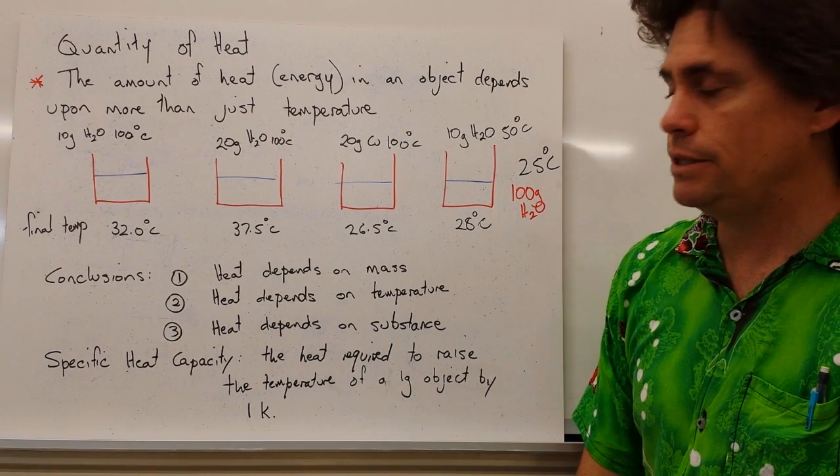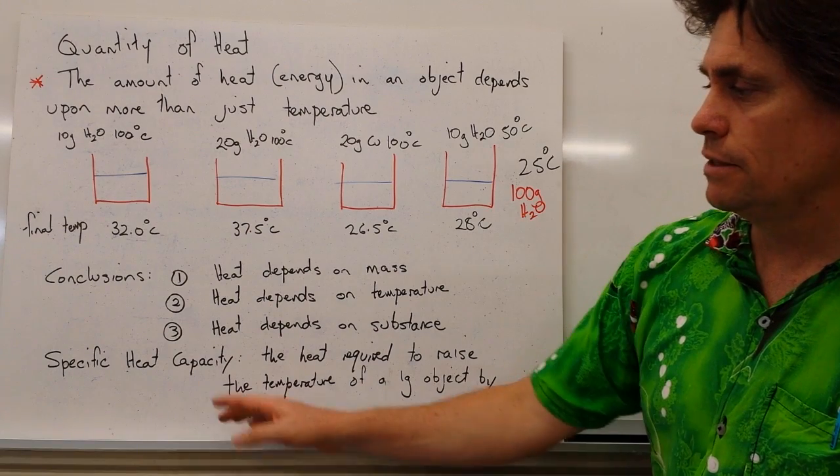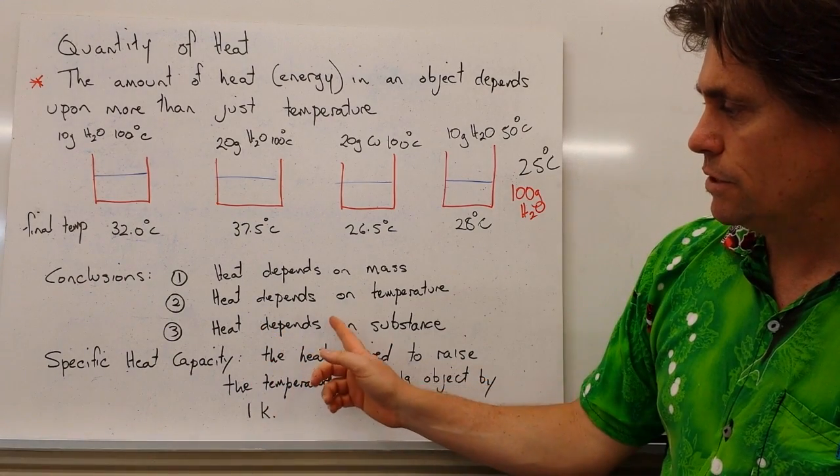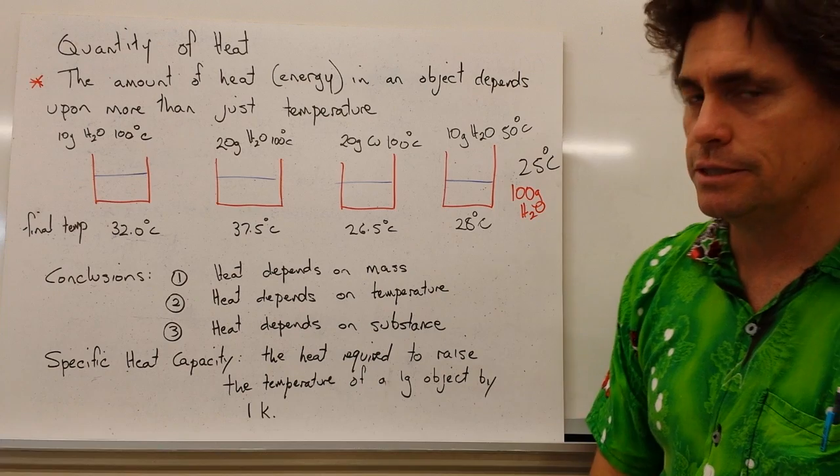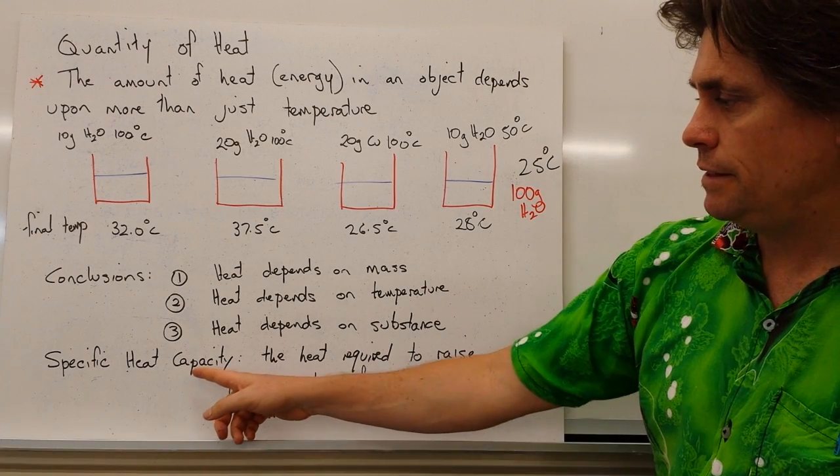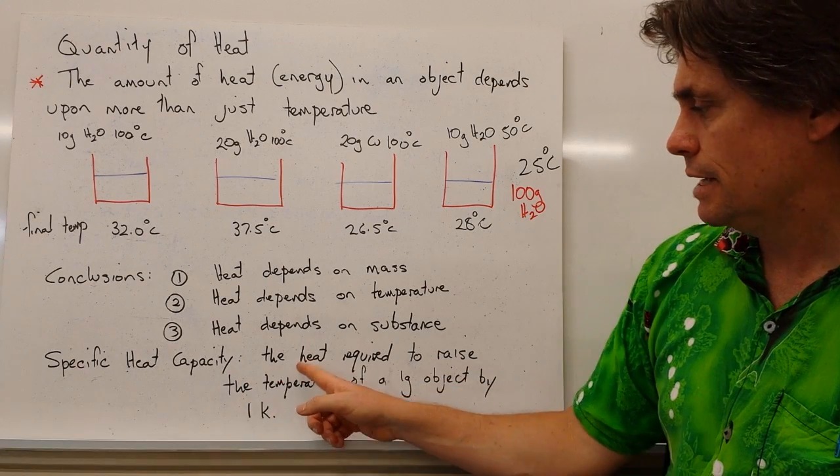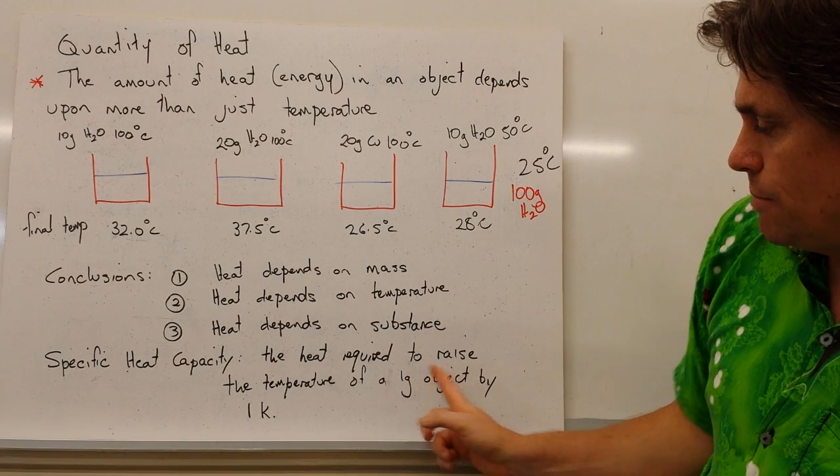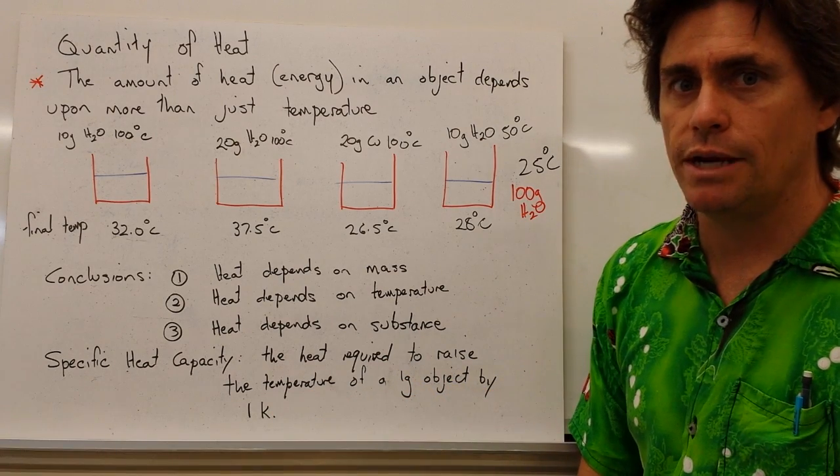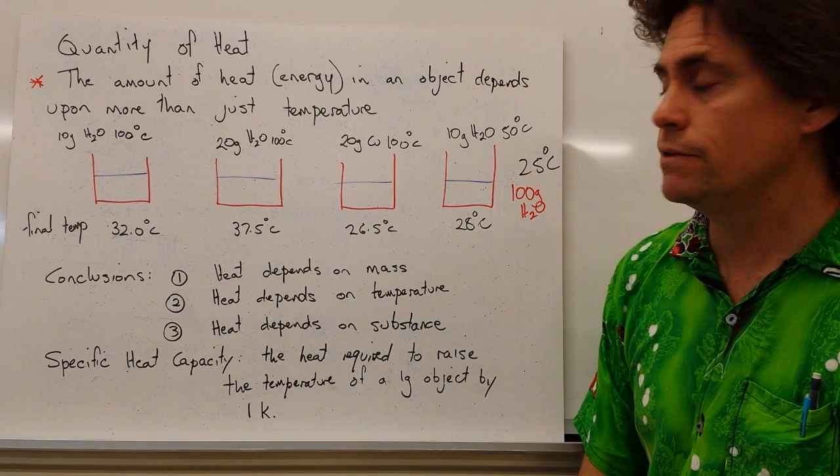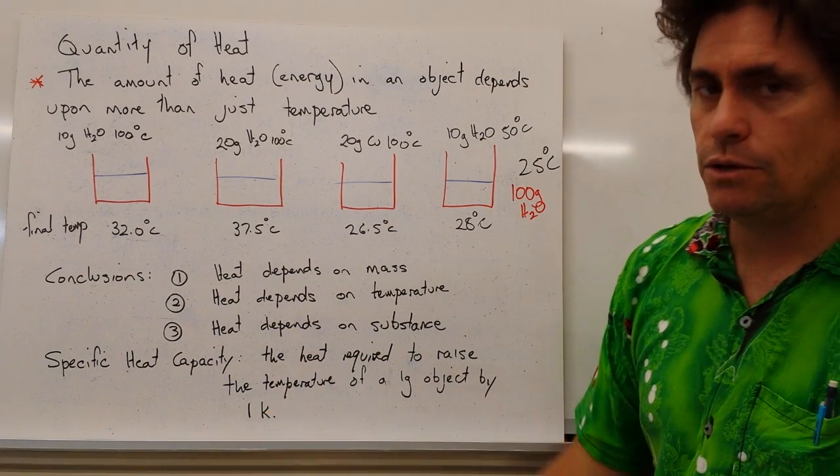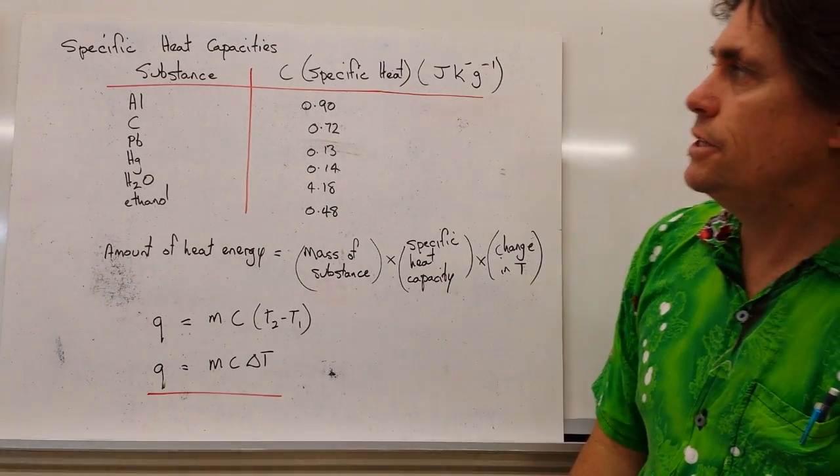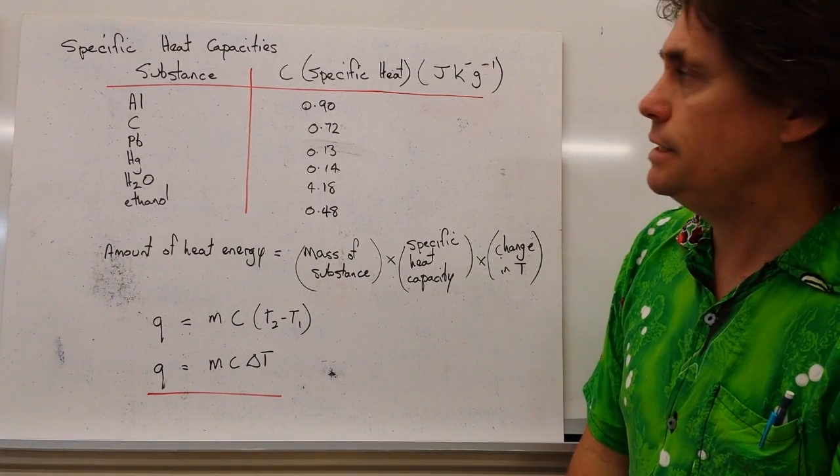So before we look at the equation or derive the equation, there's one more little thing we need to look at. And that is this definition of specific heat capacity. We saw in our third conclusion that we had a dependence on the substance in our system. So we can define this specific heat capacity for any substance as the heat required to raise the temperature of a one gram object by one Kelvin or one degree C. We can use those interchangeably and you often see them used as either one K or one degree C.